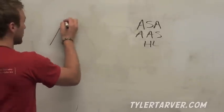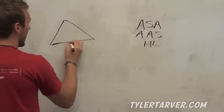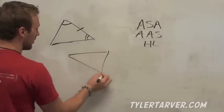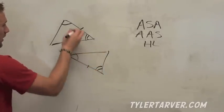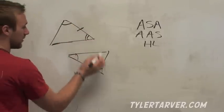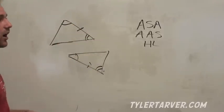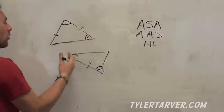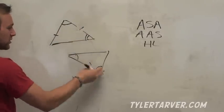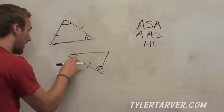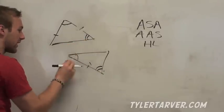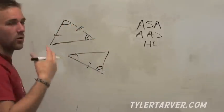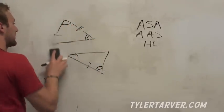ASA means for two triangles to be congruent, they have to have an angle, a side, and then another angle that are congruent. You can't just pick a side from anywhere — you have to go in order. It has to be right next to each other for it to count. Angle, side, angle — they have to be right there matched up.